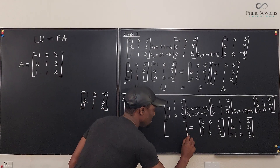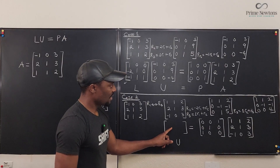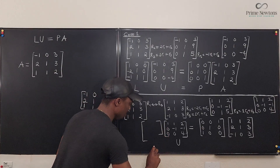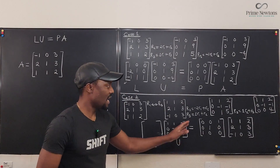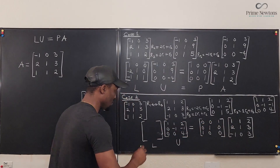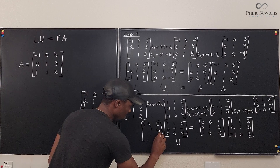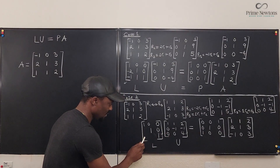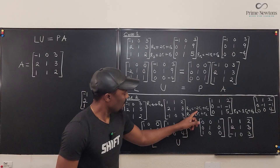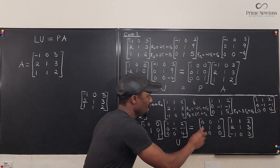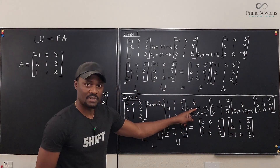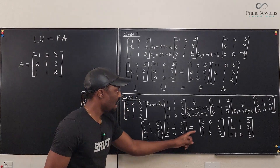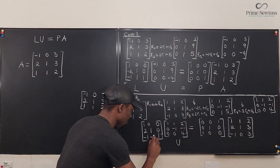Our U matrix is: one, one, two; zero, minus one, minus one; zero, zero, four. For L, start with ones on the diagonal. Go back to the eliminations and undo them: you needed minus two of row one, so put positive two; you needed one of row one for row three, so put minus one; and you needed one of row two added to row three, so put minus one. If you multiply L times U, you get the same answer as the modified A matrix.